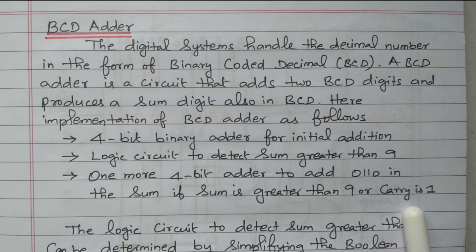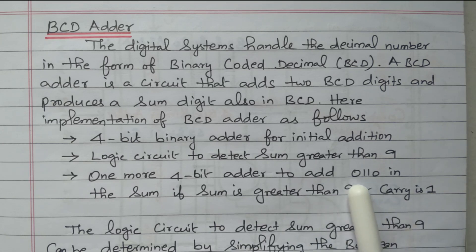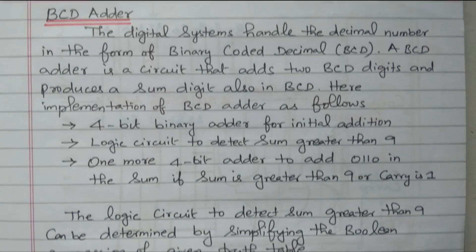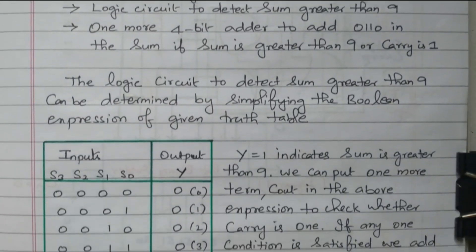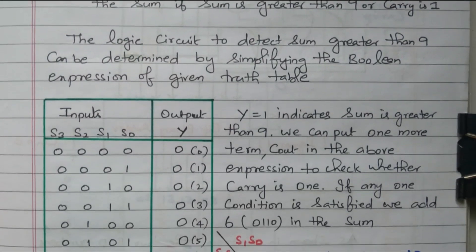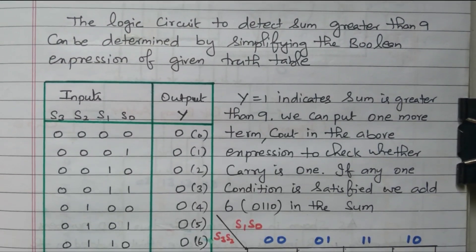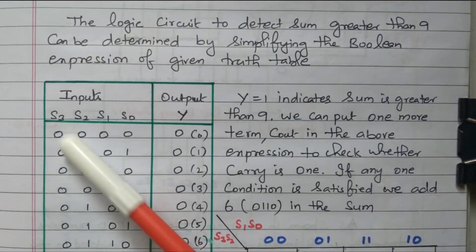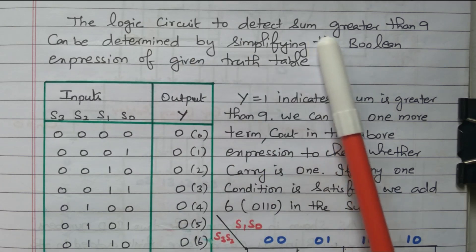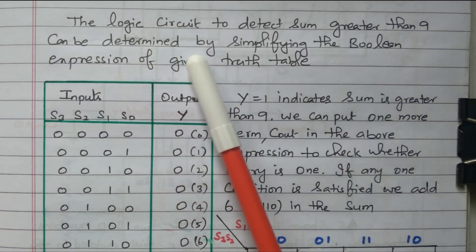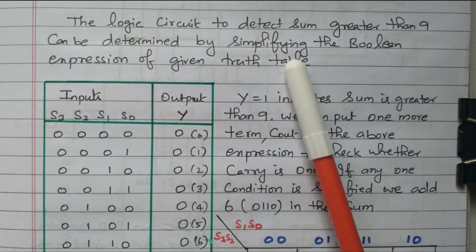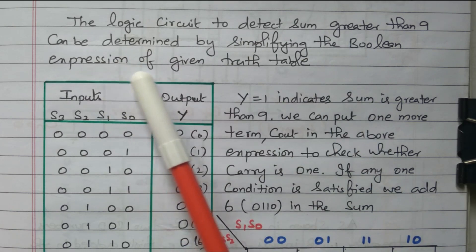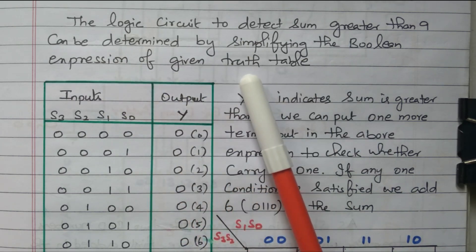And also, if the carry is generated — if the carry is one — then also we have to do the same process: we need to add 0, 1, 1, 0. Now, we will see how to detect whether the sum is greater than ten. The logic circuit to detect sum greater than ten can be determined by simplifying the Boolean expression from the given truth table.